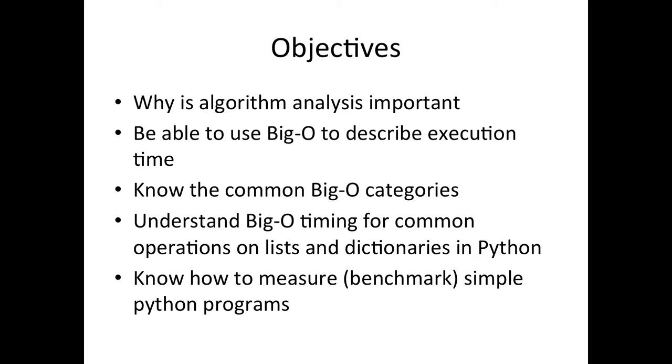So the objectives of this chapter, we're going to learn why algorithm analysis is important, and especially why this is important to computer science. We're going to be able to use what's called Big O or Omega notation to describe execution time, and this is one of the biggest things you'll get out of this chapter. We're going to know common Big O categories, understand Big O timing for common operations on lists and dictionaries in Python, and we're going to know how to measure or benchmark simple Python programs. And while we're going through this, we'll look at some examples of code.